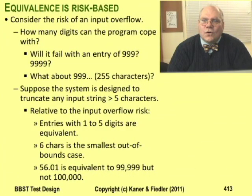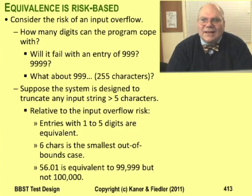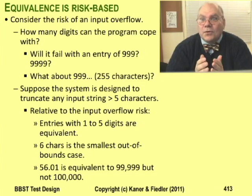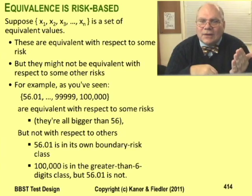Here's another example: the risk of an overflow. The program is designed to change values bigger than 56 to 56 — I demonstrated that with 999. But what about 9999? We haven't tested that yet. More generally, how many digits is too many for the program to cope with? To keep the example simple, let's pretend the program is designed to cope gracefully with numbers up to five digits long, and do something else — like crash — for anything bigger. In that case, 56.01 and 9999 are in the same equivalence class: they're both bigger than 56 and both within the five-digit limit. But 100,000 is too big for that class. So 56.01 and 100,000 are both bigger than 56, but they're not in the same equivalence class — 56.01 has fewer than five digits, and 100,000 has more.